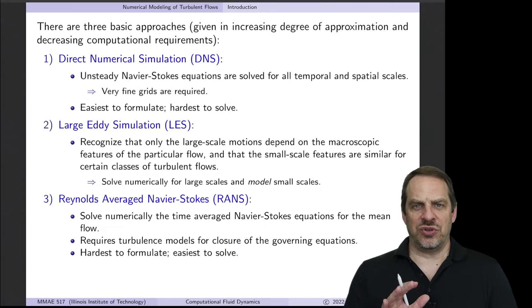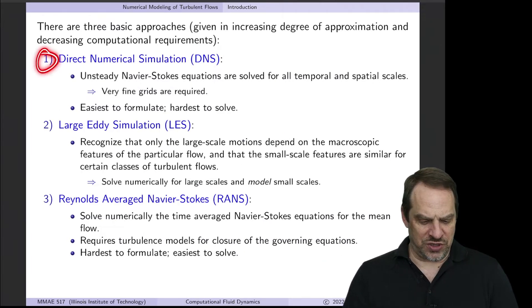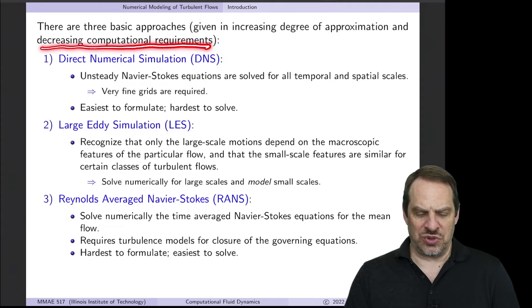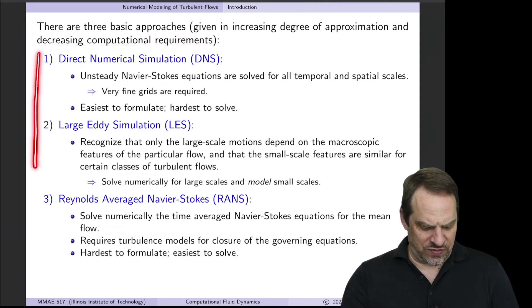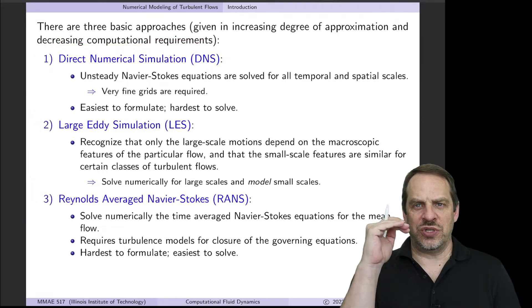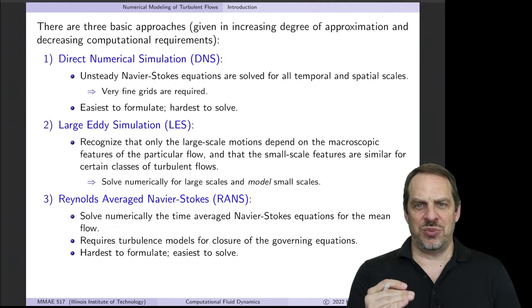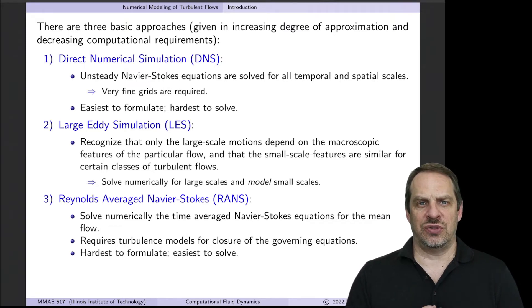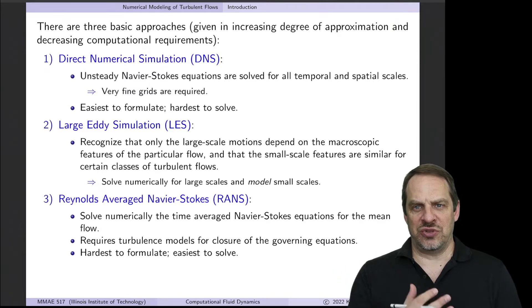So here are the three approaches that we can take, and we'll look at the first one in this video. These are given in increasing degree of approximation and decreasing computational requirements. So as I go down from one to two to three, we're going to increase the amount of approximation that we're making, and by doing so, we'll end up with a method with fewer computational requirements. So that's going to be the trade-off.